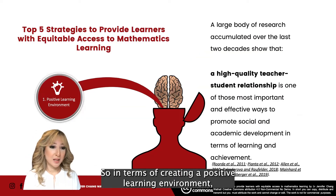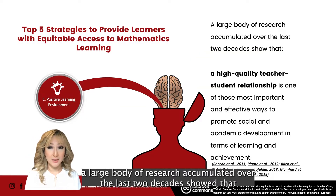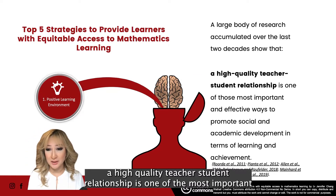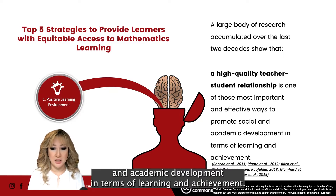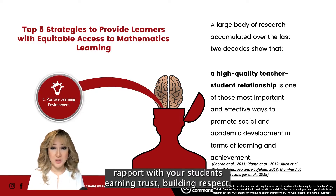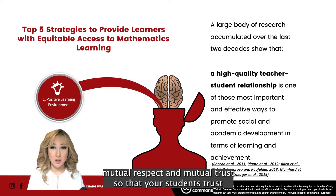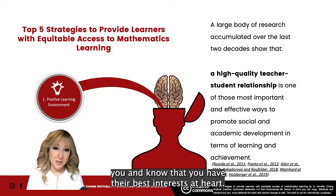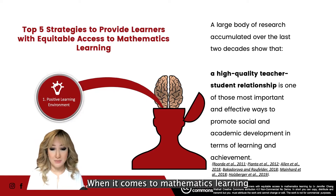In terms of creating a positive learning environment, a large body of research accumulated over the last two decades showed that a high quality teacher-student relationship is one of the most important and effective ways to promote social and academic development in terms of learning and achievement. I cannot stress the importance of really fostering a strong positive rapport with your students — earning trust, building mutual respect — so that your students trust you and know that you have their best interest at heart when it comes to mathematics learning.